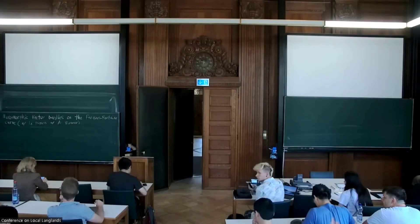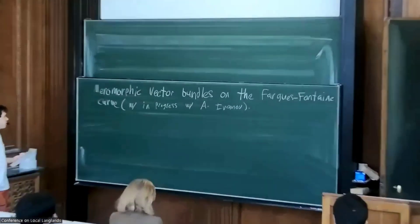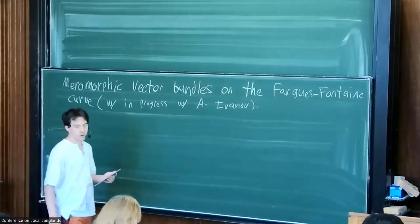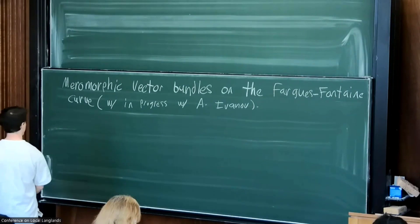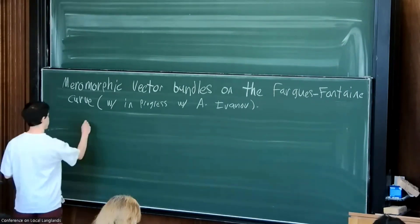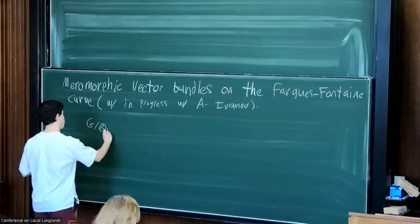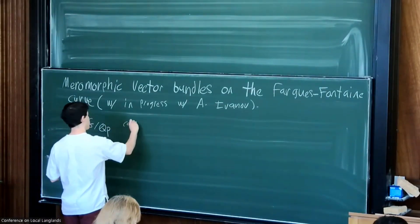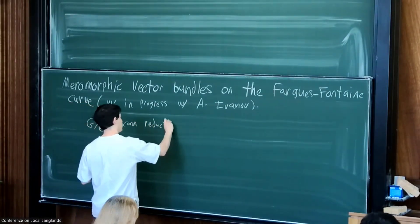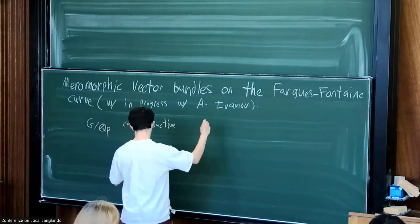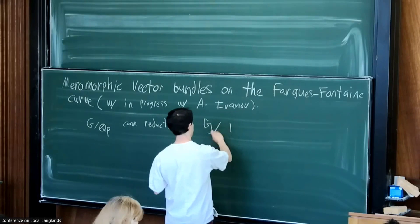I'm going to be talking about morphic vector bundles from the Fargues-Fontaine curve. This is work in progress with Alex Sibanov. Let me start by fixing some notation: G over Q_p is going to be a connected reductive group, and I'm going to fix a periodic model over C_p.